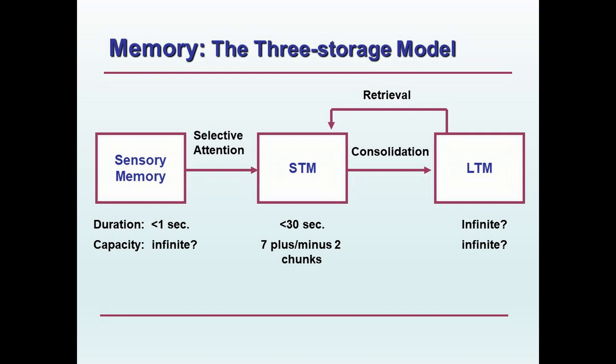We may consolidate that short-term memory as long-term memory, and later on perhaps retrieve that information from long-term memory by bringing it back into short-term or working memory. That's the basic series of processes. I want you to also know the characteristics of each of these three types of memories — specifically the duration and the capacity of each type. Duration means how long can that memory last, and capacity means how much information can be stored.